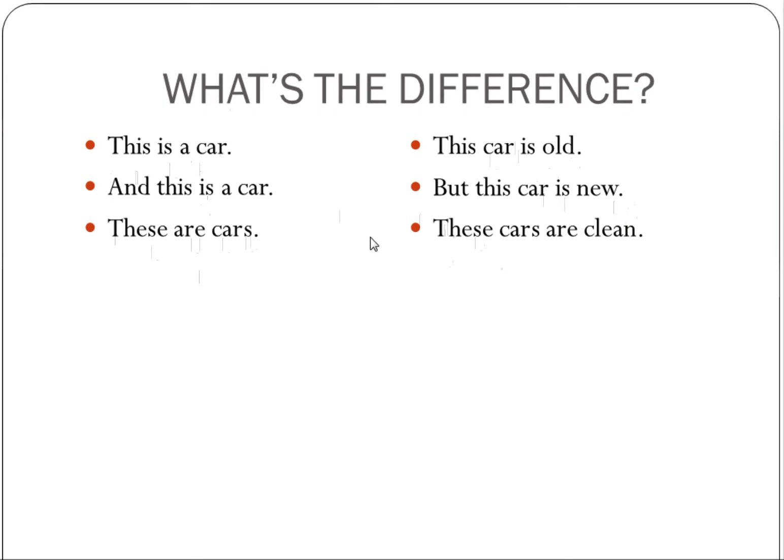There is a subtle difference between the sentences on the left and the sentences on the right. And if you can see that difference it will help you with the Russian sentences. On the left hand side we have sentences that introduce something. That's the only piece of information that we communicate here. We just name something. Oh this is a car. Mommy what is this? This is a car dear.